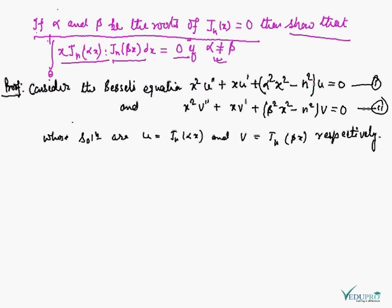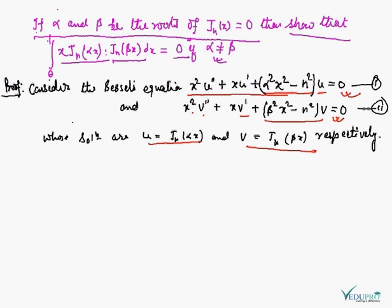Proof. Here we consider two Bessel's equations: first is x²u'' + xu' + (α²x² − n²)u = 0, and second is x²v'' + xv' + (β²x² − n²)v = 0. It is obvious that the solutions of these two Bessel's equations are, first, u = J_n(αx) and second, v = J_n(βx) respectively.